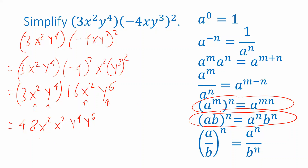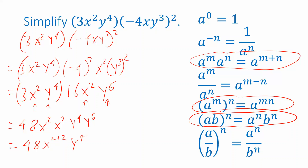When you're just doing multiplication, you can rearrange the order however you like. Now I've got x squared times x squared — two expressions with the same base — and I want to combine their exponents. That's where this rule comes in: a to the m times a to the n means I can add the two exponents. So x squared times x squared is x to the 2 plus 2, and y to the fourth times y to the sixth is y to the 4 plus 6. Simplifying: x to the 4, y to the 10. And there's our answer: 48x to the fourth, y to the tenth.